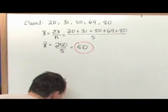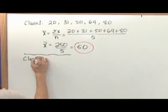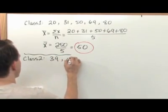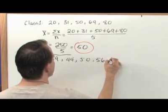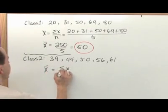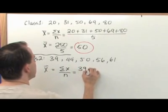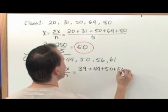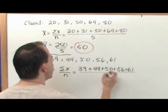Okay, now let's go off and look at class number two. The grades in class number two are 39, 44, 50, 56, and 61. Let's calculate the average of these grades. The average value is the sum of the values over the number of values that we have. So it's going to be 39 plus 44 plus 50 plus 56 plus 61 all divided by one, two, three, four, five, five grades.